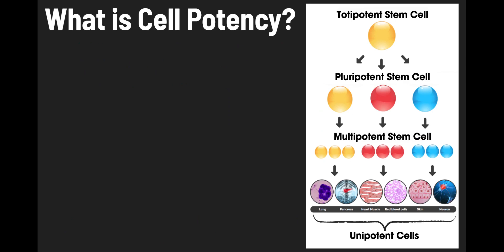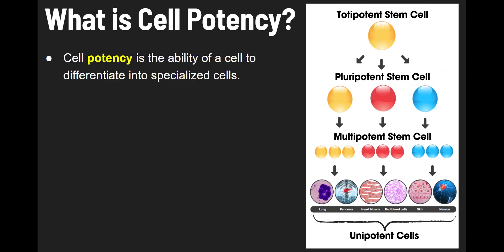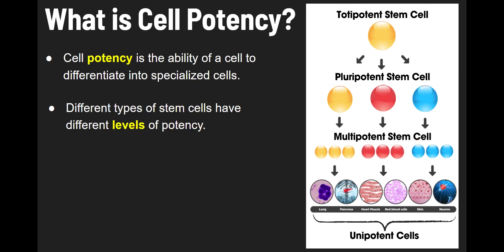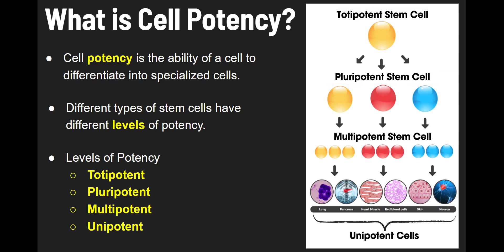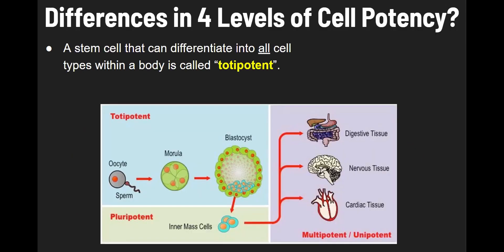This leads to a discussion about cell potency. Cell potency is the ability of a cell to differentiate into specialized cells. Different types of stem cells have different levels of potency. There are actually four levels of potency: a cell can be totipotent, pluripotent, multipotent, or unipotent.